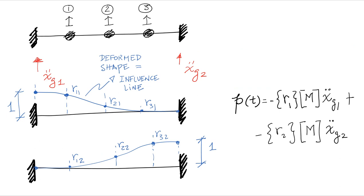Suppose we have a beam here fixed at both ends and we have two different support motions happening at the two ends. In one case we call it XG double dot one for the left and XG double dot two for the right. In this case when we move the left one unit each degree of freedom moves slightly different based on the deformed shape that the beam would take under a unit displacement of the left support.